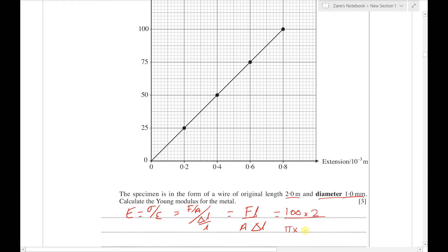To find the cross-sectional area, it's π times the radius squared. Note that we've got a diameter of one millimeter, so the radius is 0.5 of a millimeter. Mustn't forget to turn the millimeters into meters—so it's 0.5 times 10 to the minus 3 squared. The extension that goes with the 100 Newton force is 0.8, but again we've got to remember that it's actually millimeters, so there's a 10 to the minus 3 factor there.